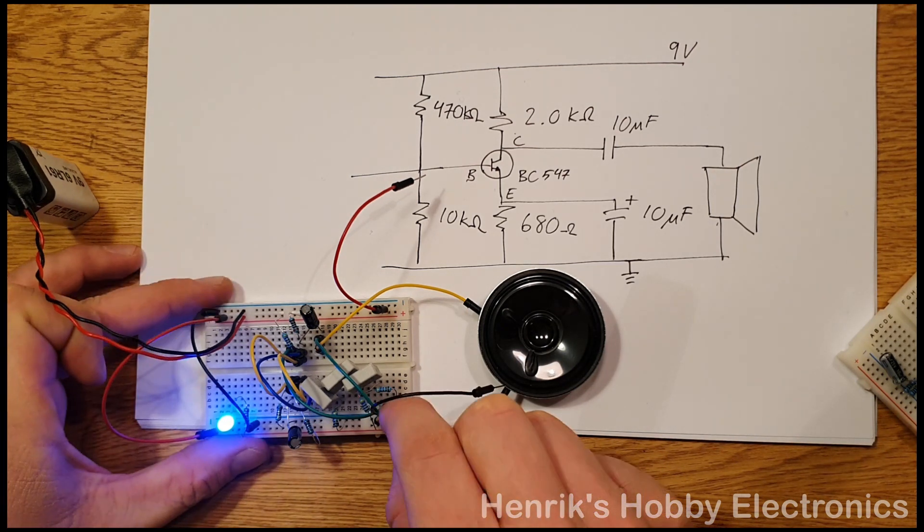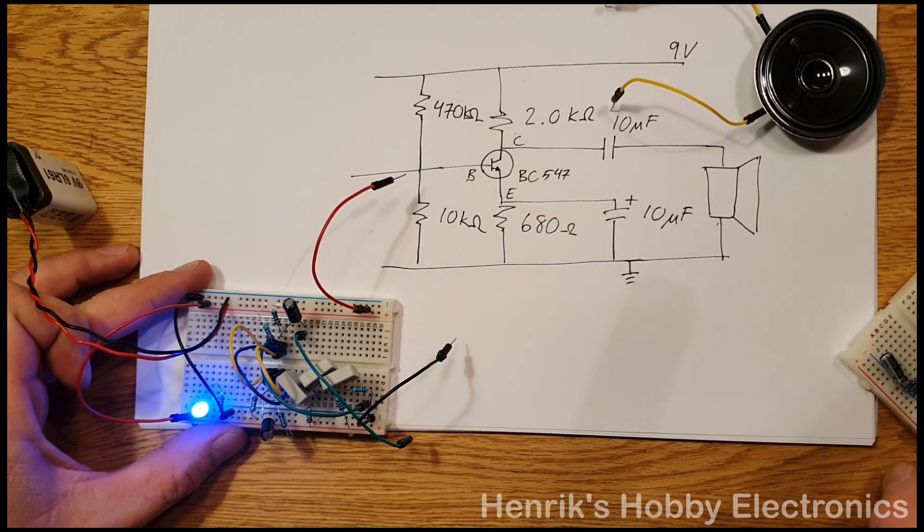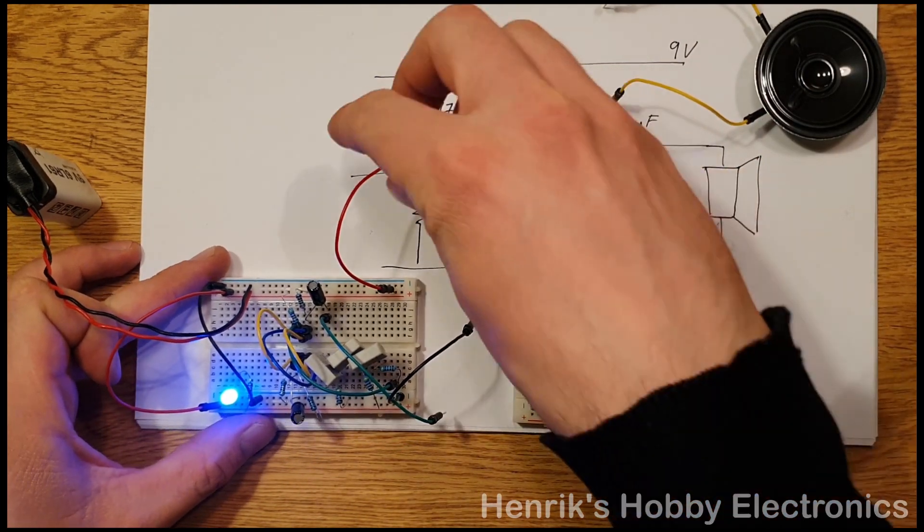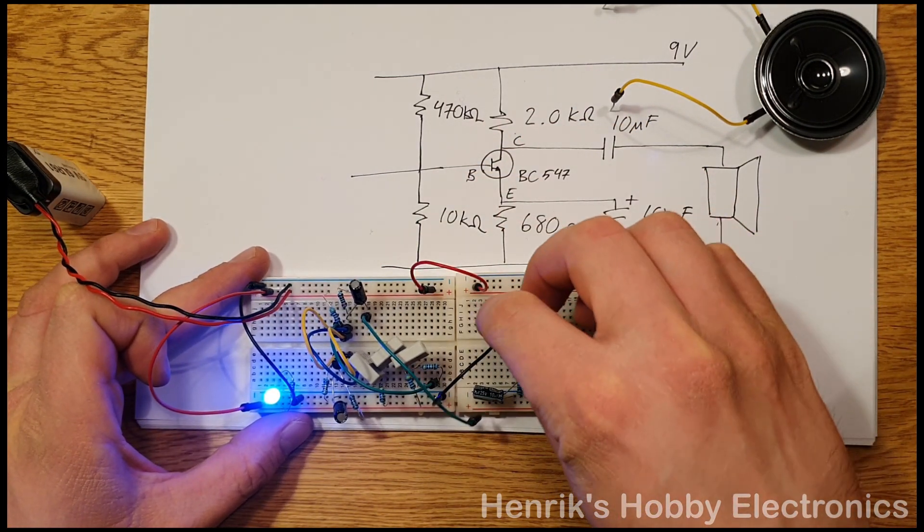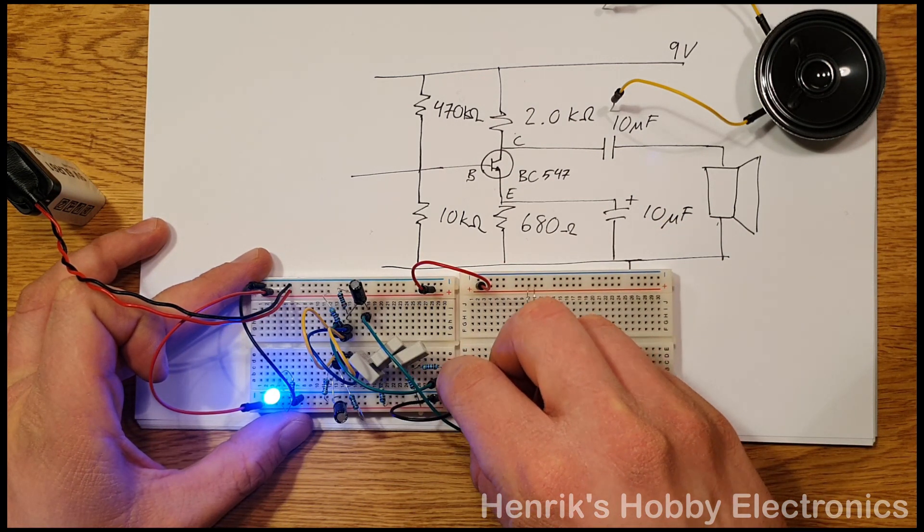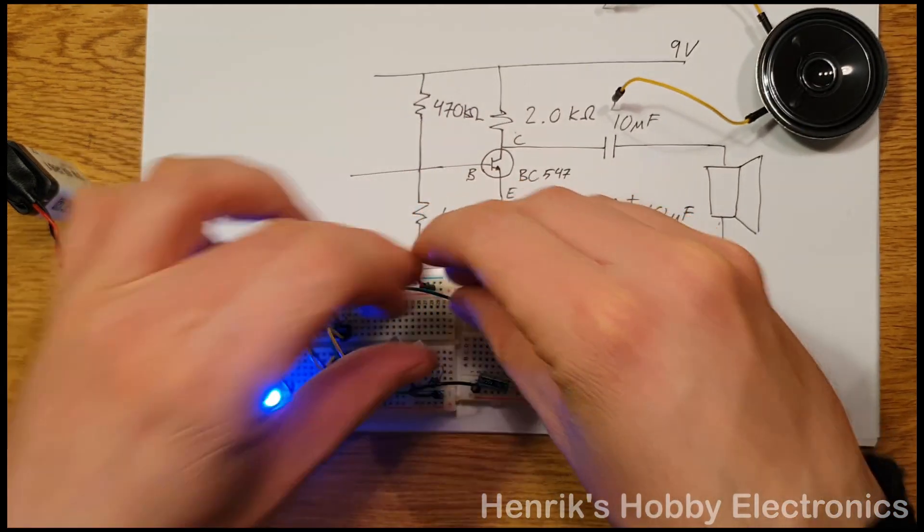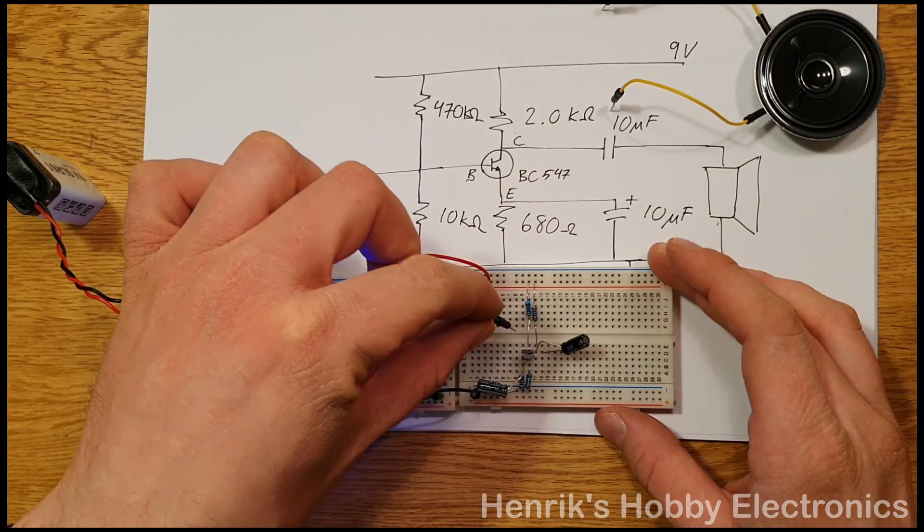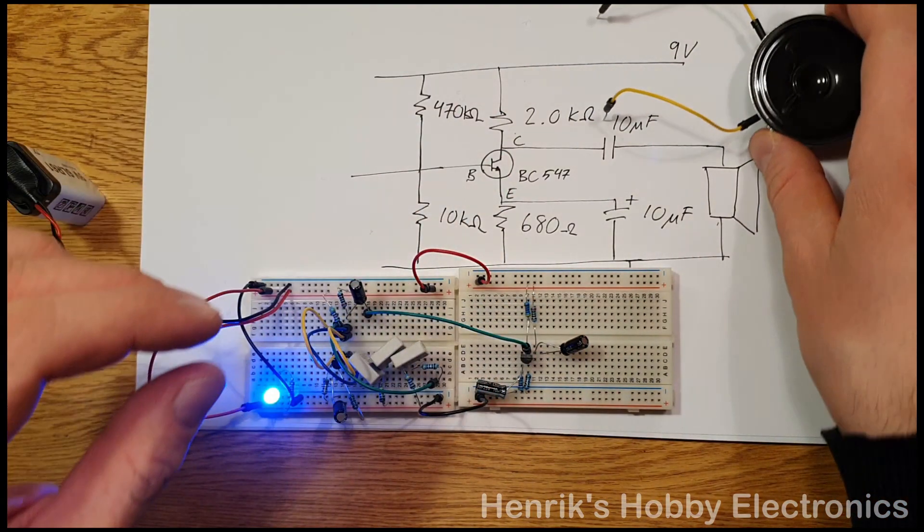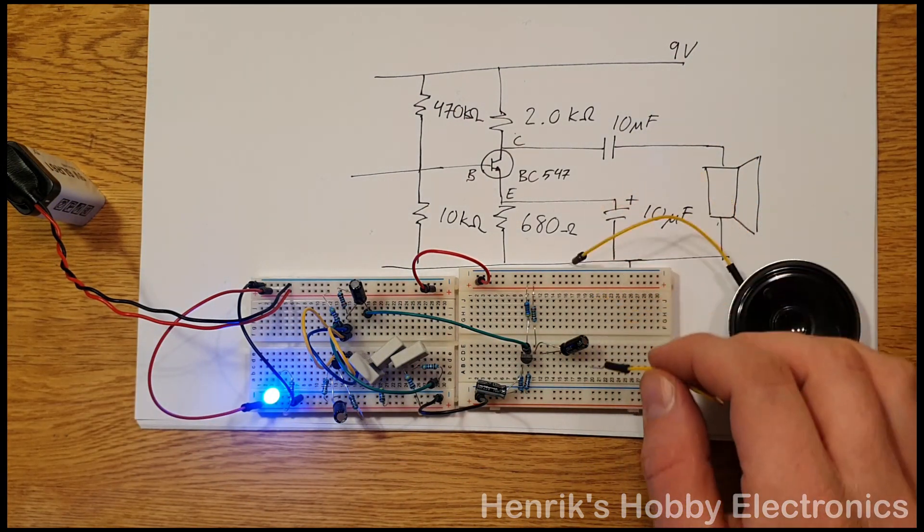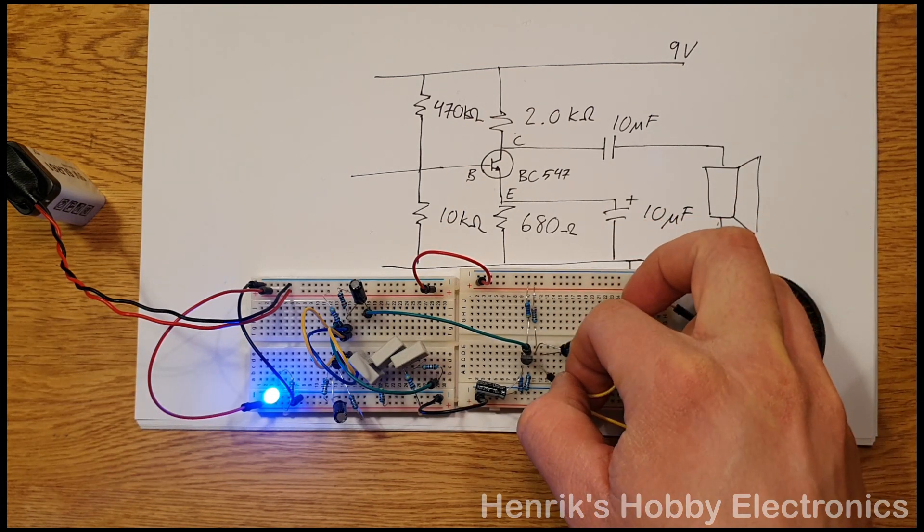Now let's amplify this signal through the amplifier that we just made on the breadboard. So we'll connect the plus 9 volts here and we'll connect the ground here, and we'll connect the signal now to the base of the transistor. And then we have the loudspeaker. We connect one end to the ground and then the other one to the output capacitor.